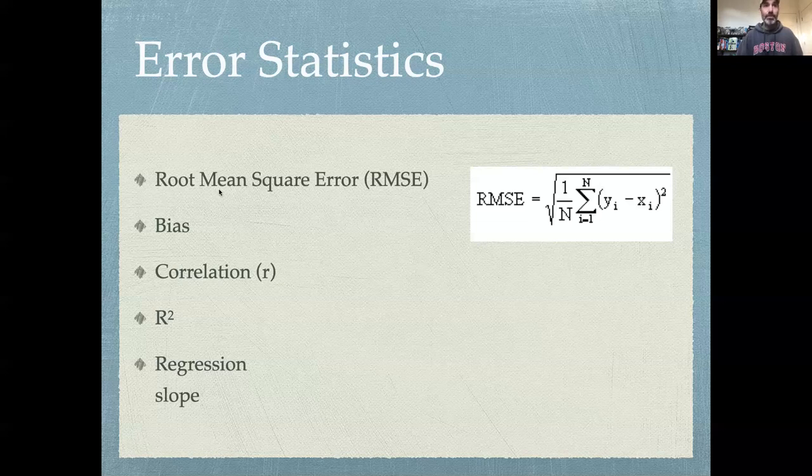Root mean squared error is literally telling you: square root of a mean of a square of an error.